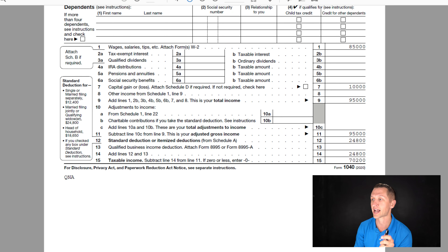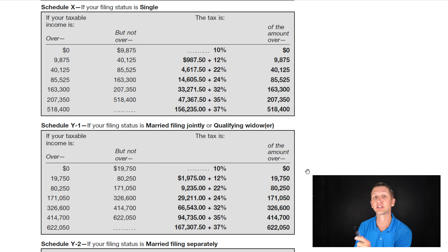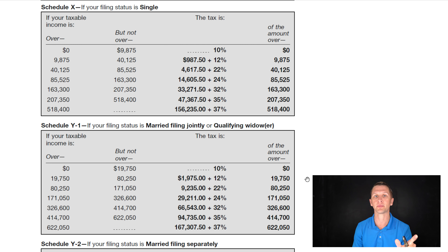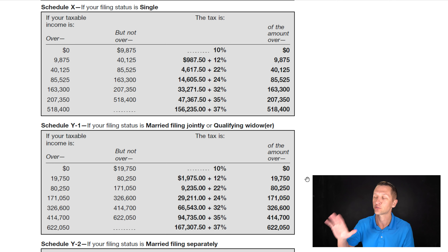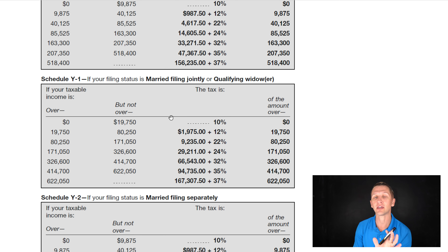Let's look at some tax brackets to make sure our math is correct. This is directly from IRS Publication 17 — I'll leave that link in the description. Publication 17 covers individual taxes and is basically an annual guide the IRS puts out. These tax brackets are pretty easy to look at; they might seem confusing if you haven't looked at one before, but let's break it down.